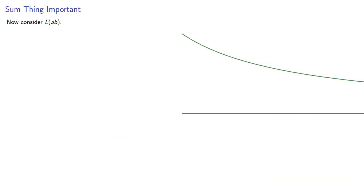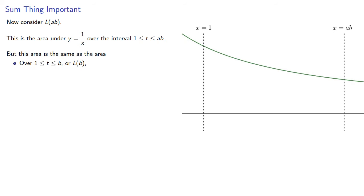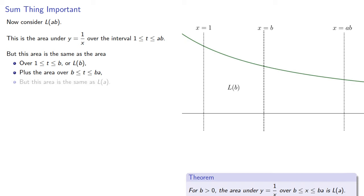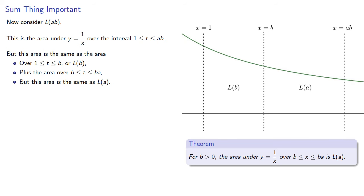Now consider l of ab. This is the area under y equals 1 over x over the interval from 1 to ab. But this area is the same as the area over the interval from 1 to b, well that's just l of b, plus the area over the interval from b to ba. But this is the same as l of a, and so l of ab is l of a plus l of b.